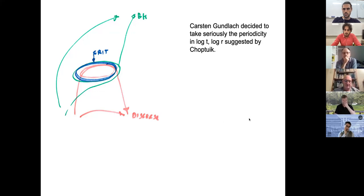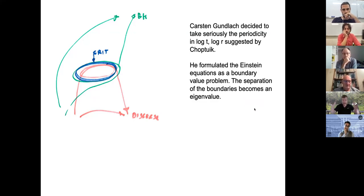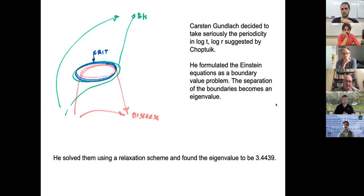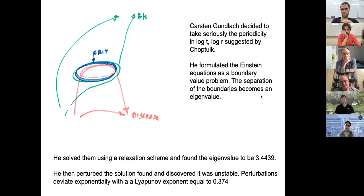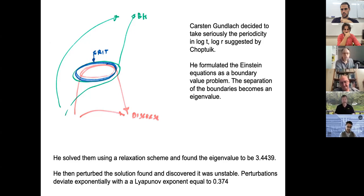Kirsten Gundlach took seriously the periodicity in log t, log r and formulated the Einstein equations as a boundary value problem, demanding periodic boundary conditions in log t, log r with the period kept free — a boundary eigenvalue problem. Using a relaxation scheme, he found the eigenvalue to be 3.44, which was the period Choptuik had found. He then perturbed this solution and found perturbations that deviate exponentially with a Lyapunov exponent of 0.374, which was the exponent Choptuik found. This completed the picture.